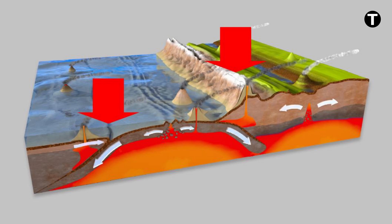In subduction zones, earthquakes represent half of those that are destructive on Earth and dissipate 75% of the Earth's seismic energy. It is the only place where we find deep earthquakes, from 300 to 645 kilometers.